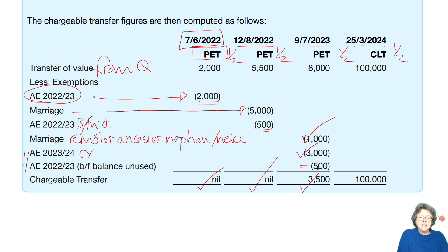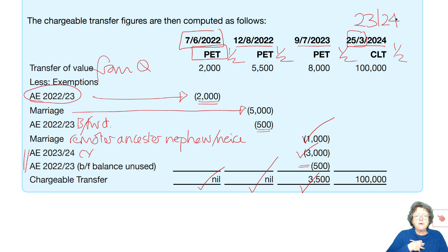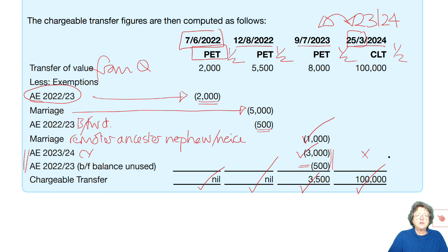The CLT takes place before the end of the tax year, so that's in 23-24. Unfortunately, all the annual exemption has been used. If I was advising this client, I would have advised them to do it the other way around, so that the exemption came off the CLT instead. Therefore the whole of that CLT amount is chargeable under the CLT rules.